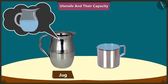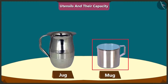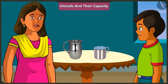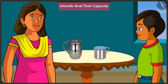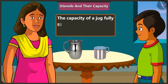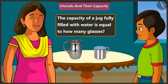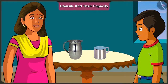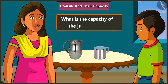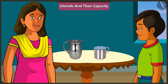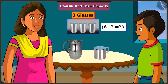Look, this jug is half filled with water and the mug is completely filled. So, which of these two have more water? This mug has more water because this is completely filled. No, Mishtu. This jug has more water. Tell me, what is the capacity of this jug? How many glasses of water can fill this jug? The capacity of this jug is equal to six glasses. So, this half-filled jug has water equal to how many glasses of water? It is equal to three glasses.